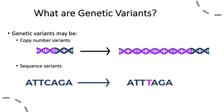Copy number variants are genetic changes where a person has large missing or extra pieces of genetic material. If a person is missing genetic material, this is called a deletion. If they have an extra piece of genetic material, this is called a duplication. If we think about our entire genome as a library, a copy number variant would equate to extra or missing books on a shelf.